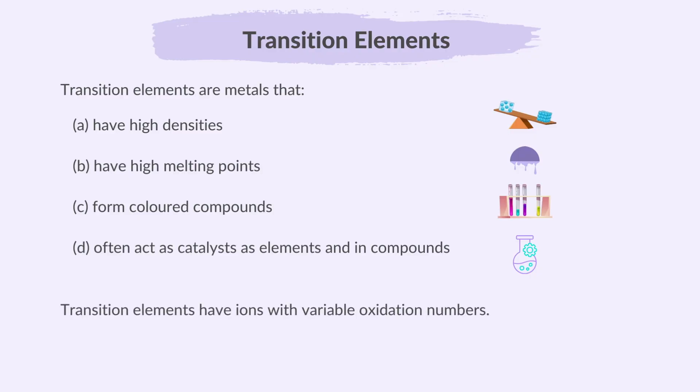Transition elements have ions with variable oxidation numbers, meaning they can lose different numbers of electrons resulting in ions with different charges. For example, iron commonly forms two oxidation states: iron(II), where it loses two electrons, and iron(III), where it loses three electrons.